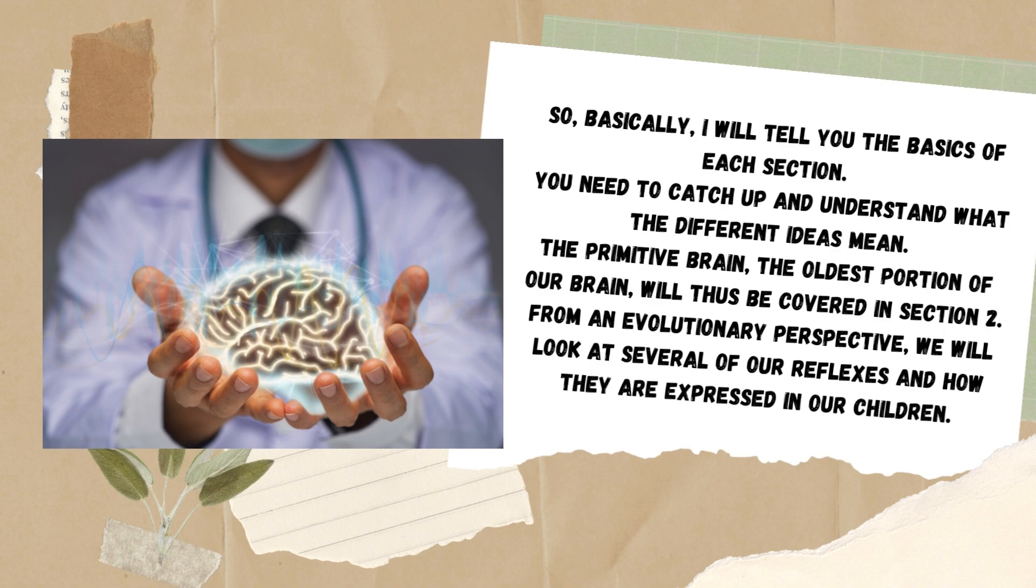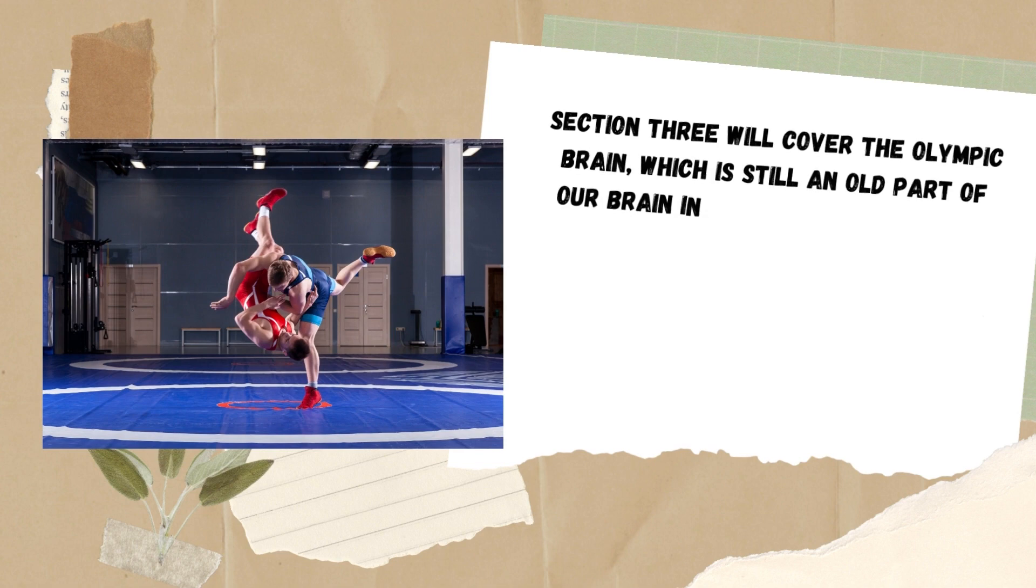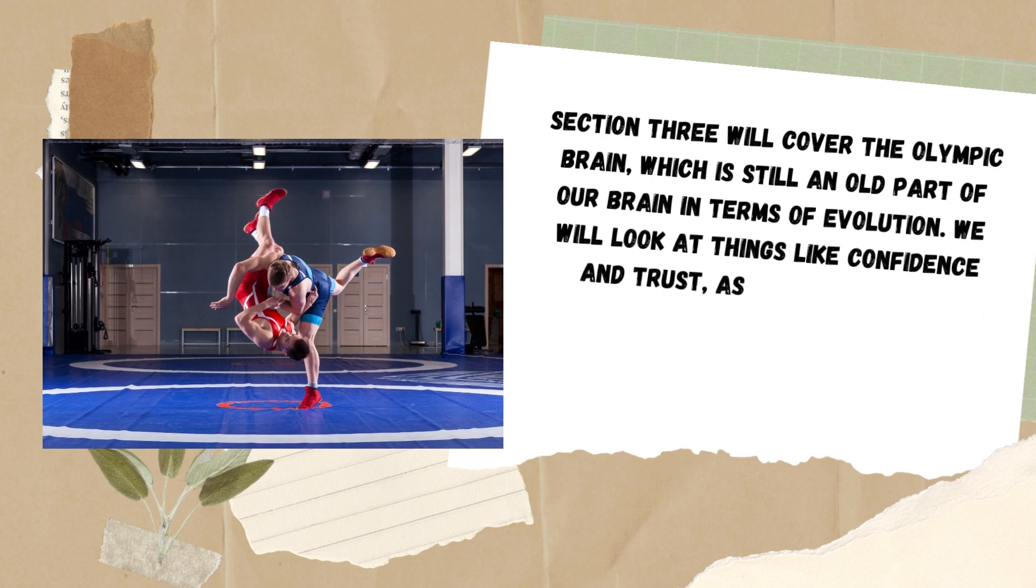Section three will cover the limbic brain, which is still an old part of our brain in terms of evolution. We will look at things like confidence and trust, as well as how our interactions with people shape our children.